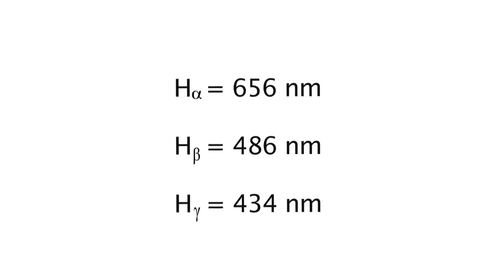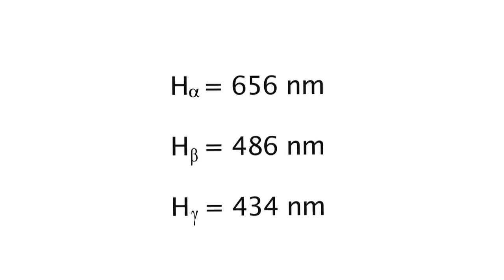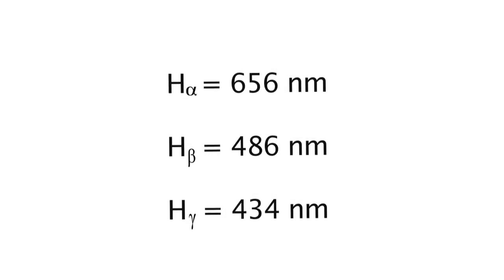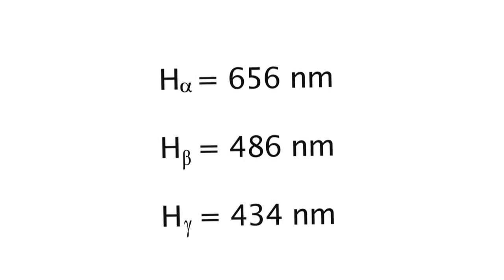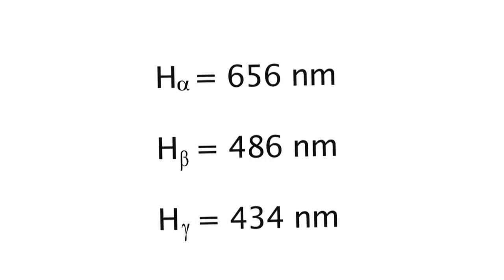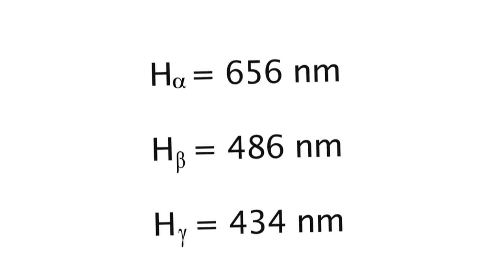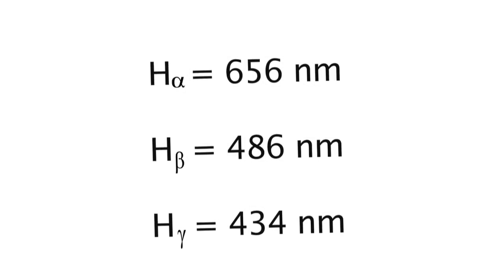The first three lines in the Boehmer series are H alpha at 656 nanometers, H beta at 486 nanometers, and H gamma at 434 nanometers. H alpha is red color, H beta is cyan, and H gamma is a blue color.